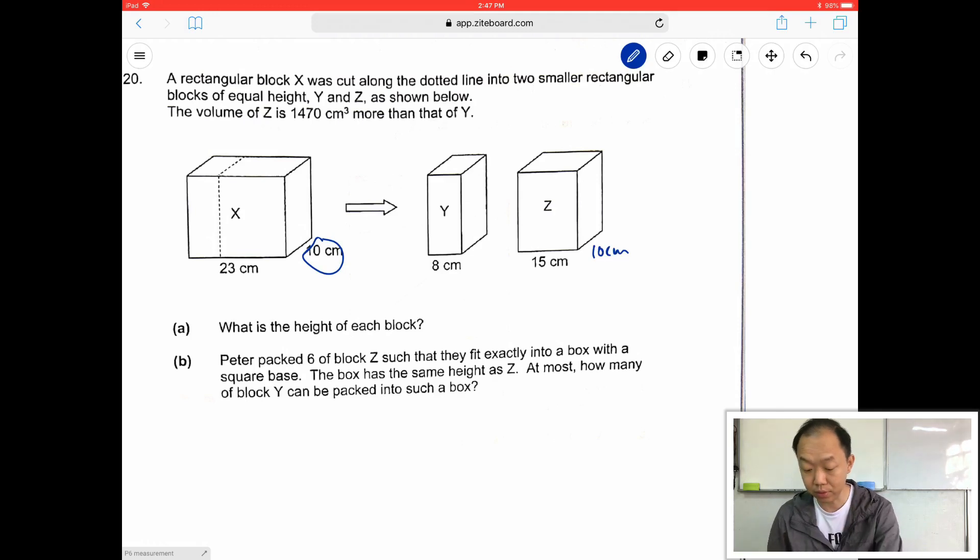What is the height of each block? So I know the base area. The base area of Z is 150 cm², the base area of Y is 80 cm², and then I know that the difference between Z and Y is 1470. And the height are the same. What does this mean? This means if I take Z, the volume of Z, I take away the volume of Y, it will give me 1470.